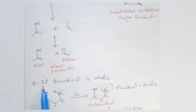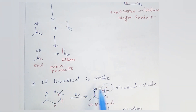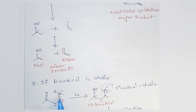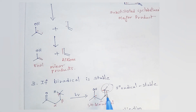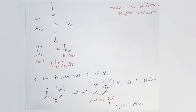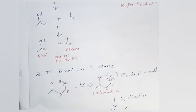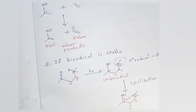If the biradical formed during photolysis of a carbonyl compound having a gamma hydrogen is stable, it forms a cyclic product as the major product.